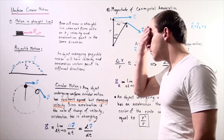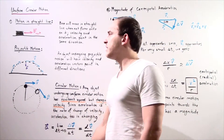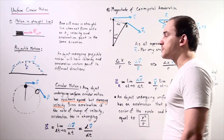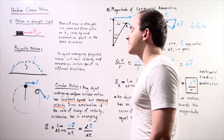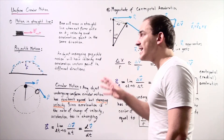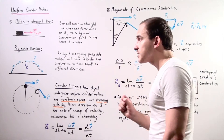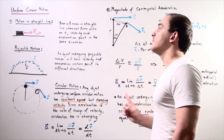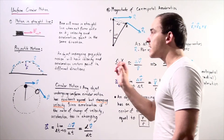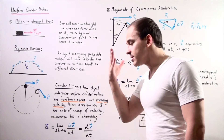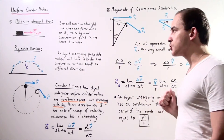Before we talk about uniform circular motion, let's recall how objects move along one dimension and along two dimensions. Suppose we have a box resting on a horizontal surface and we apply a net force pointing in the positive direction along our x-axis. The object will accelerate in the same direction as the net force, and the velocity vector and acceleration vector will point in the same exact direction — the box moves in a straight line along the x-axis.